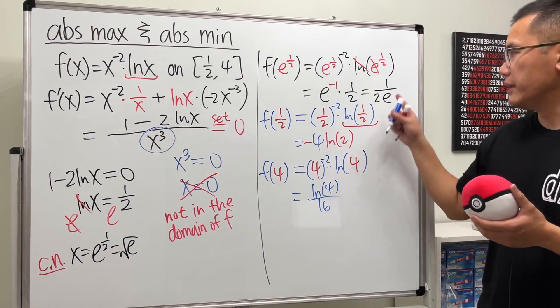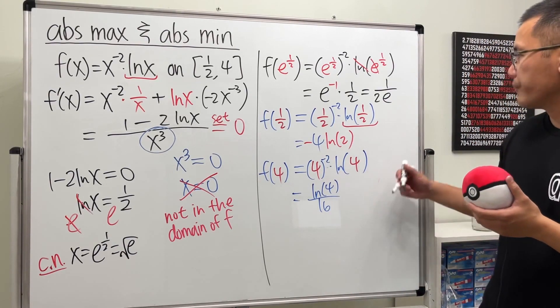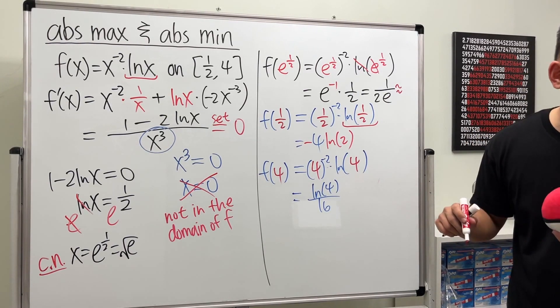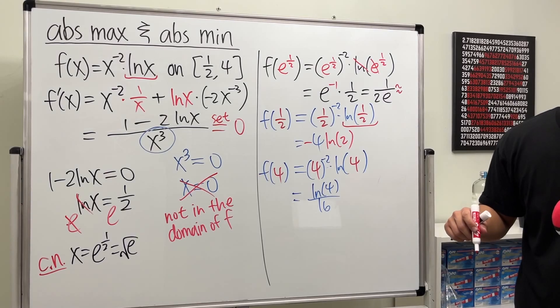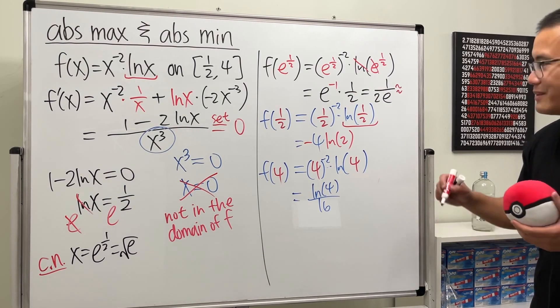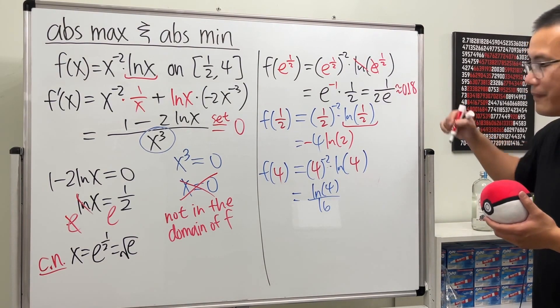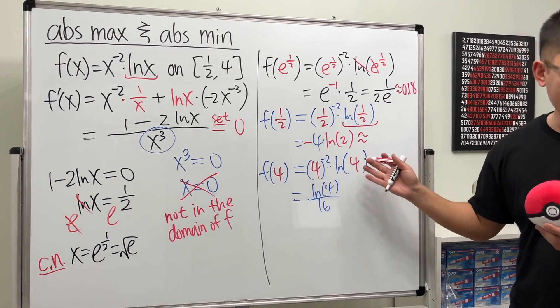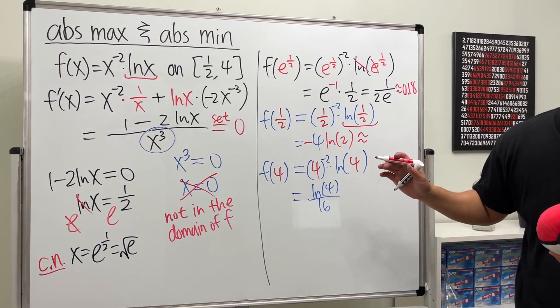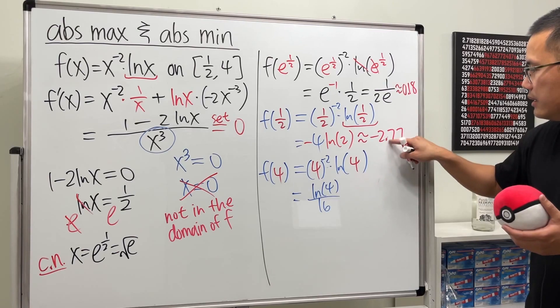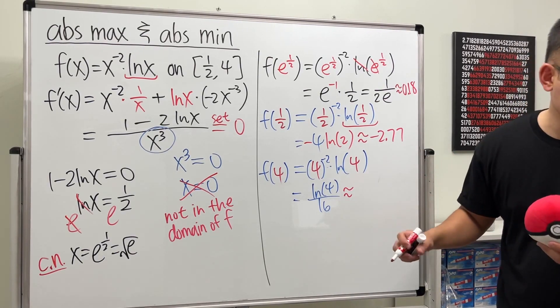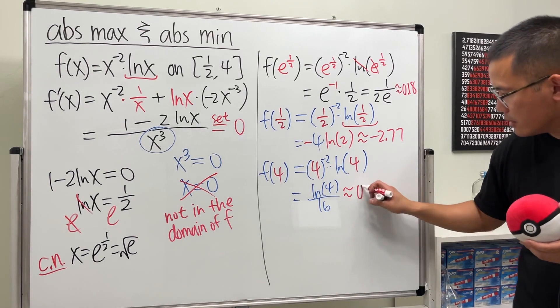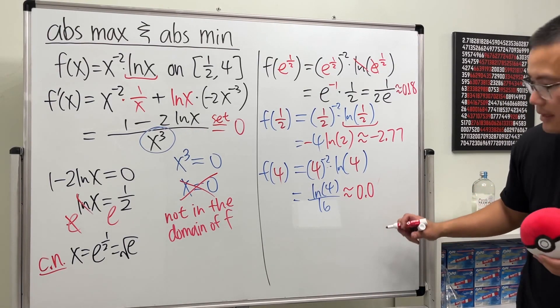But I will give you guys the decimal approximation, though. 1 over 2e is approximately, let me see, is approximately 0.18. Yeah, which is pretty small, I would say. 0.18. Alright. And then this right here, it's negative. But I will still give you guys the approximation. Anyway, this is approximately negative 2.77. And then this right here is approximately 0.087. So 8.7, something like that.